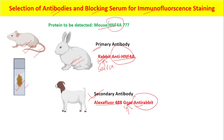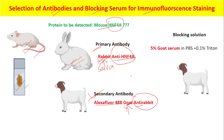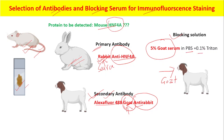The secondary antibody is against the source of the primary antibody — the source is rabbit, therefore we have anti-rabbit, and the secondary antibody source is goat. Then, what should the blocking solution contain? The blocking solution should contain serum from the animal from which the secondary antibody is derived. Here, the secondary antibody source is goat, so the blocking solution we will use is 5% goat serum in PBS plus 0.1% Triton.